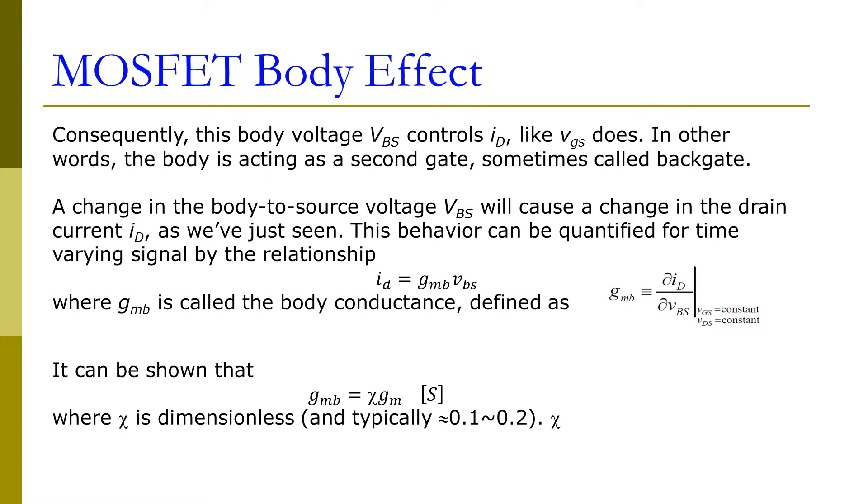As we just saw, this behavior can be quantified for time-varying signals by the relationship ID equals gmb times Vbs, where Vbs is the small signal change between body and source. The gmb is called the body conductance, defined by this formula as the partial derivative of drain current with respect to the body-to-source voltage.